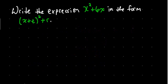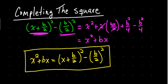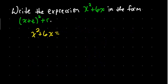Let's look at an example here. Write the expression x squared plus 6x in the form x plus t squared plus r. So, x squared plus 6x equals, and if we go back and look at this formula, we'll see it's x squared plus bx. So, what is our b here? What's b going to be? Here's b.